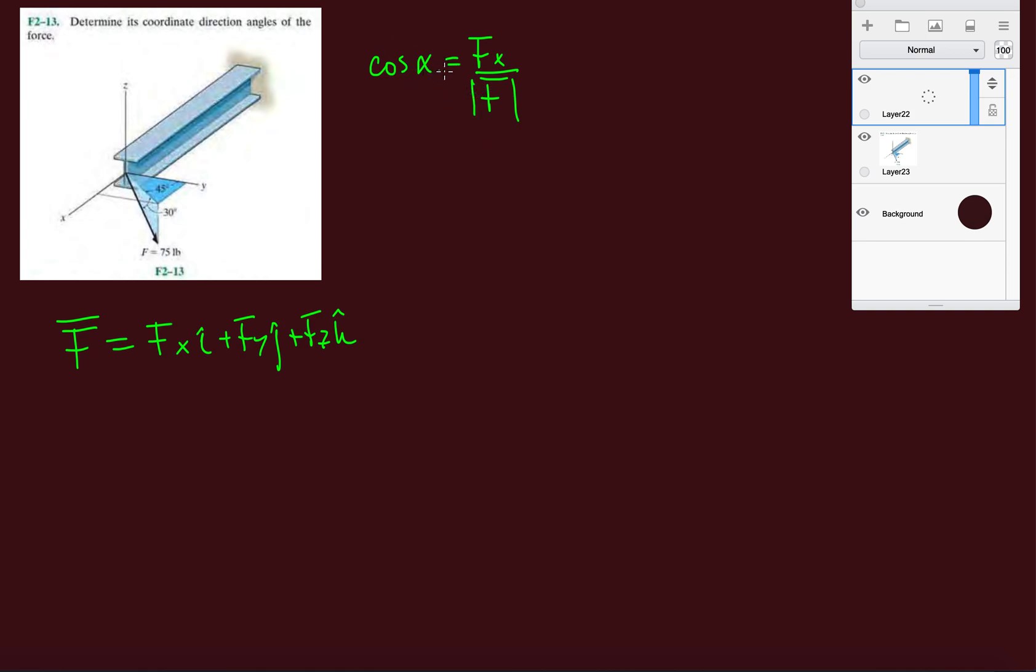That's the angle that the force makes with the positive x axis. Cosine beta is going to be Fy divided by the magnitude of the force, and then you have cosine gamma, which is going to be the z component divided by the magnitude of the force.